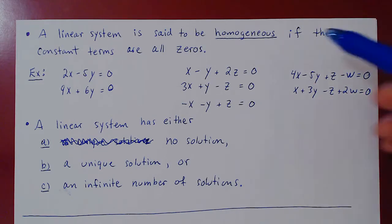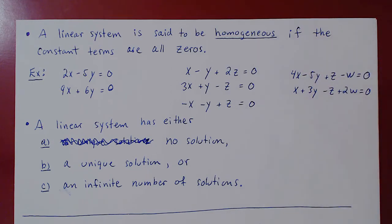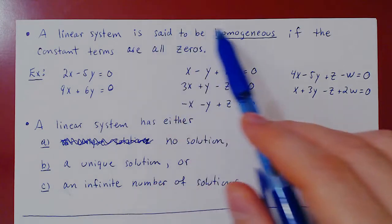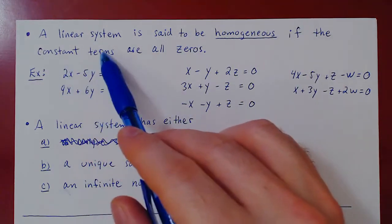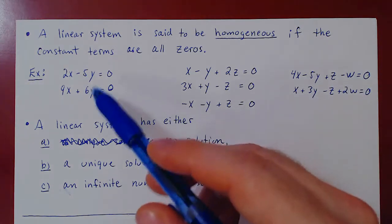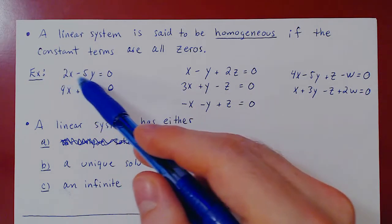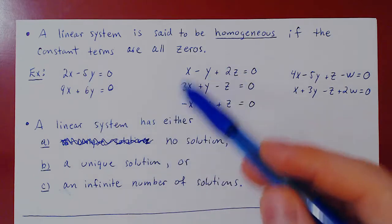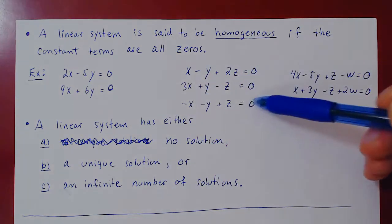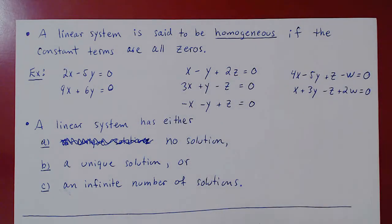In this video we will go over a simple definition and a few short results. A linear system is said to be homogeneous if the constant terms are all zeros. Here are three examples. The coefficients — the real numbers multiplying the variables — can be anything you want, but the constant terms are all equal to zero. So all three linear systems are homogeneous.